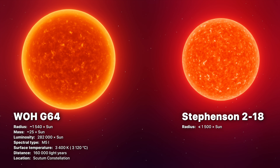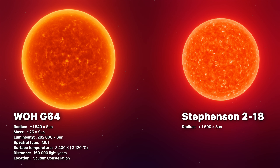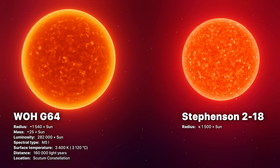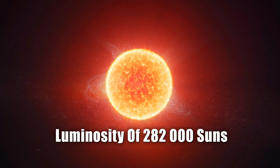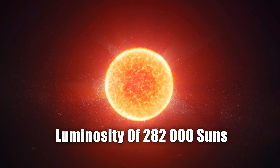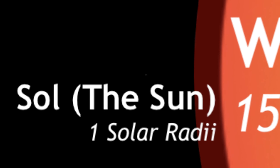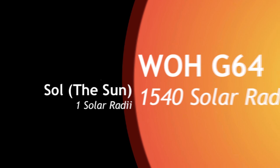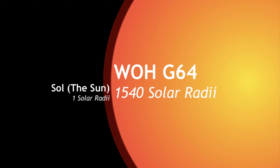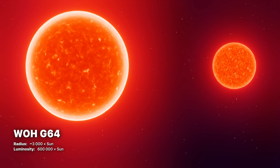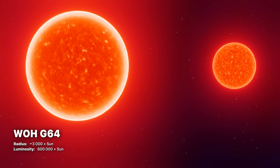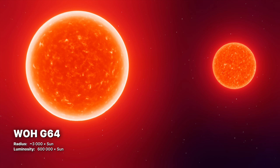With WOHG64 being the largest known star in the universe, with a radius of 1540 solar radii and a luminosity around 282,000 times the solar luminosity, which fits the theoretical limit for star size and is consistent with many other large red hypergiant stars found elsewhere. In the past, the characteristics of WOHG64 changed quite often — it was speculated that the size of the star could reach a whopping 3,000 solar radii and a luminosity of 600,000 suns.